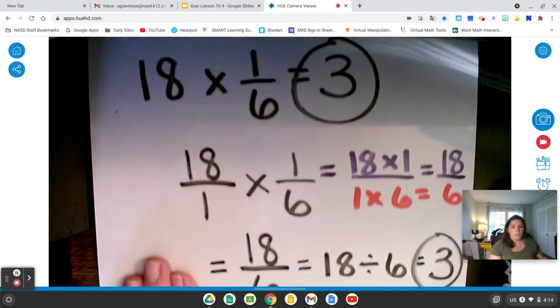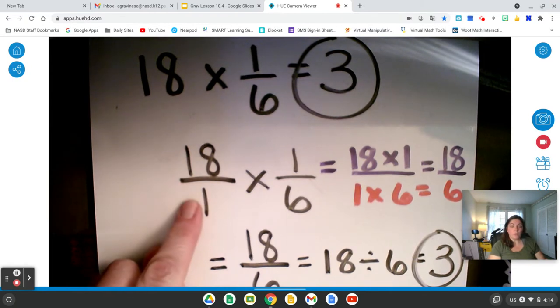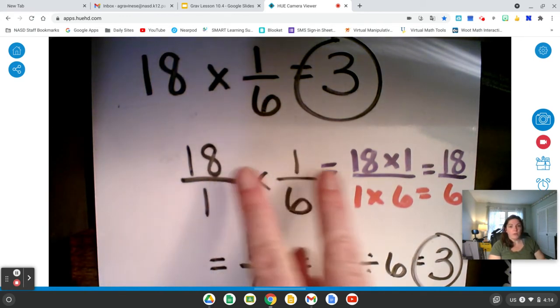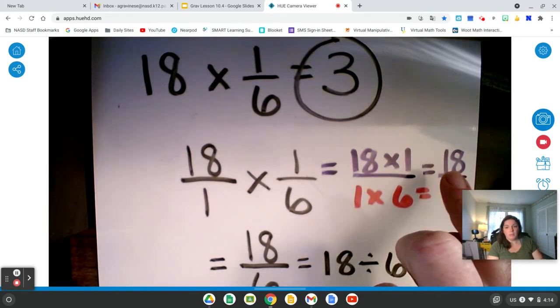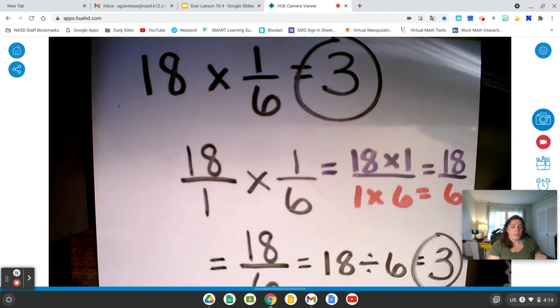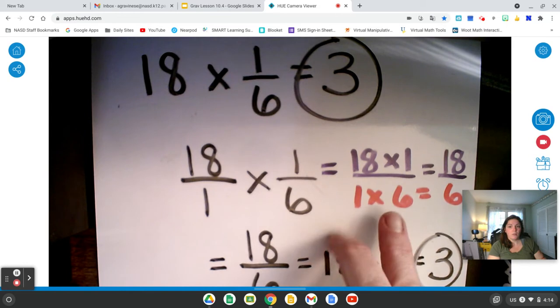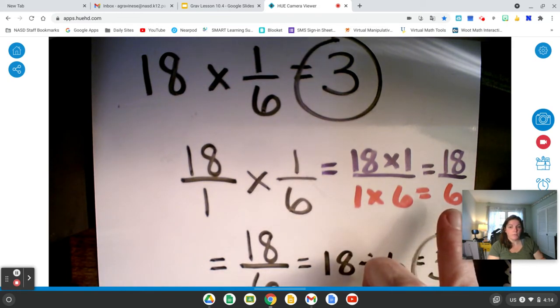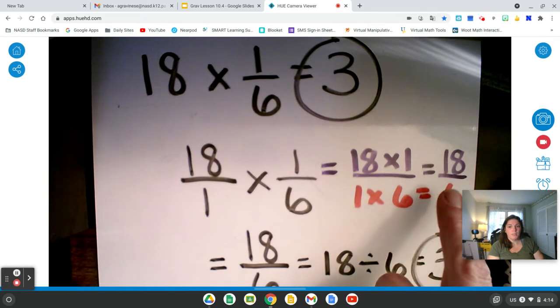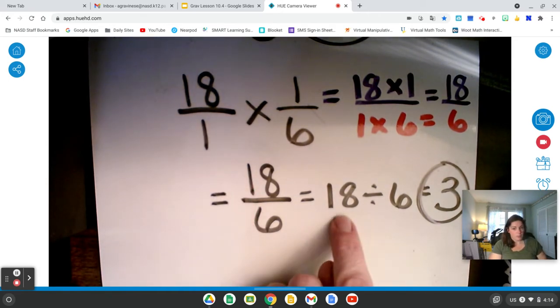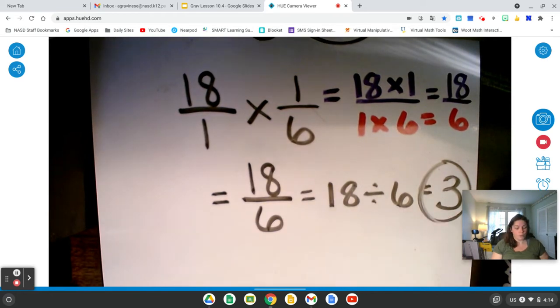So let's recap what we did. First, I made my whole number look like a fraction by placing a 1 as the denominator. Then I multiply my numerators together. 18 times 1 equals 18. That's my numerator. Then I multiply my denominators together. 1 times 6 equals 6. And that's my denominator. I have the fraction 18 sixth, which can be simplified. Because all fractions can be written as division, 18 sixth is really 18 divided by 6. And that equals 3.